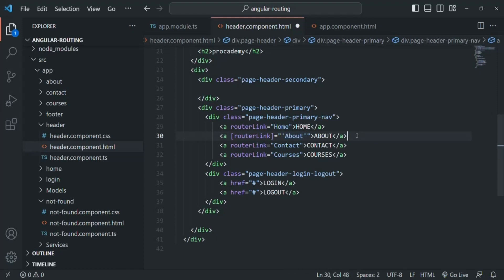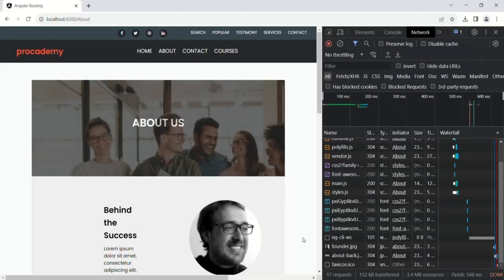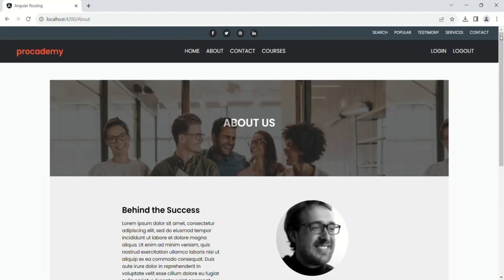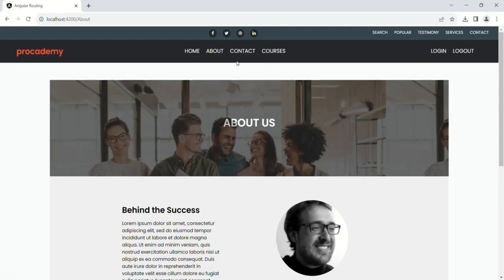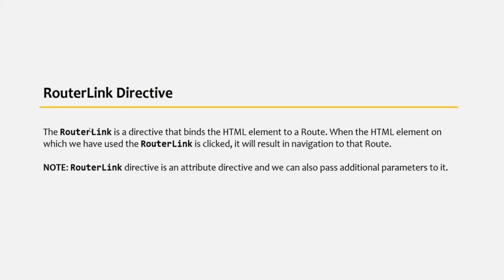If we save the changes and go back to the web page, let me go to the home page and then to the about page — this is also working. So routerLink is a directive that binds the HTML element to a route. In our example the HTML element is the anchor element and we are binding that anchor element to a route based on the path. When the HTML element on which we have used routerLink is clicked, it will result in navigation to that route — and we have just seen that with an example.